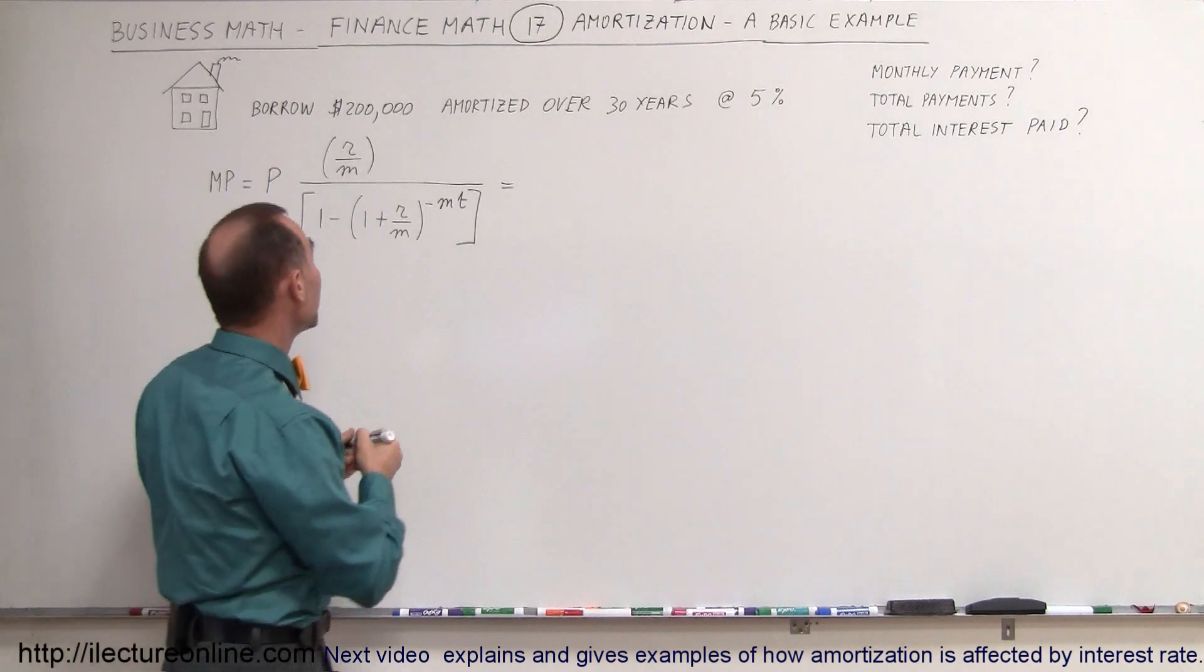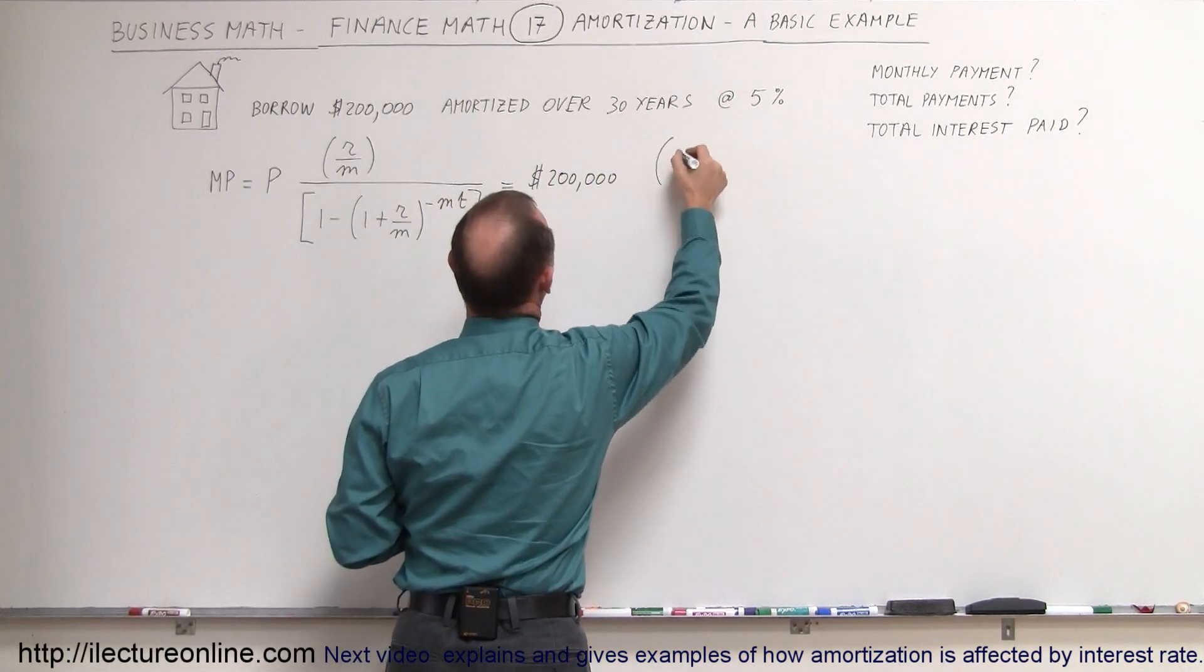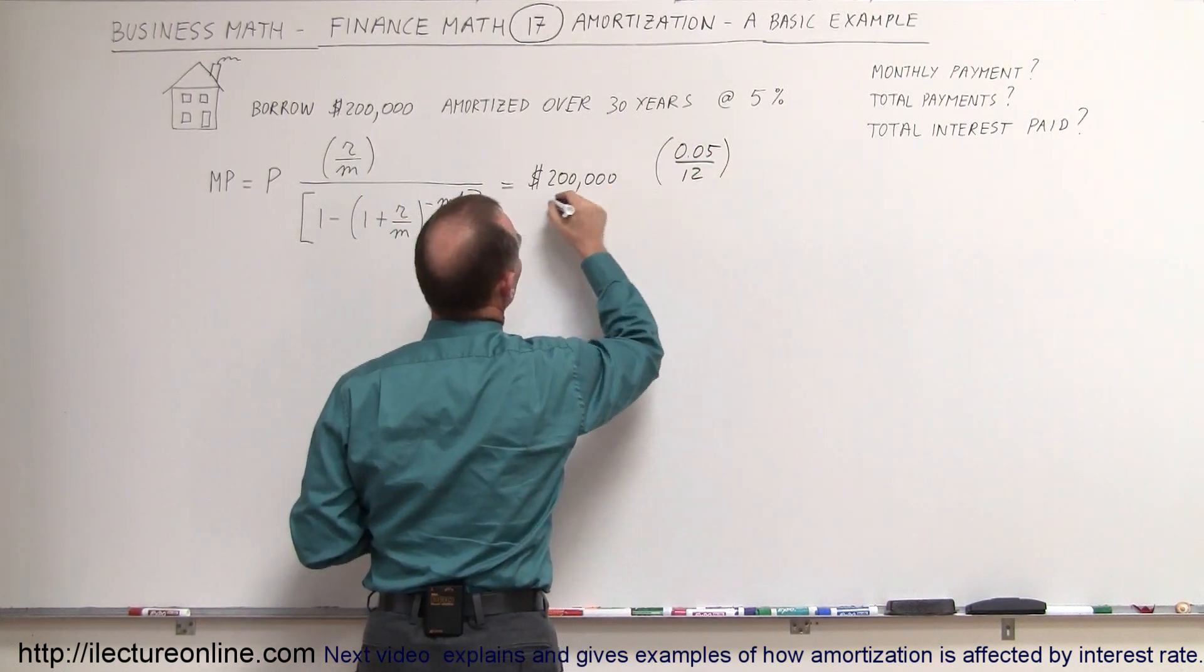Let's find out what the monthly payment will be. So it's equal to $200,000, times the rate, 0.05, divided by the number of payments in a year. That's 12.